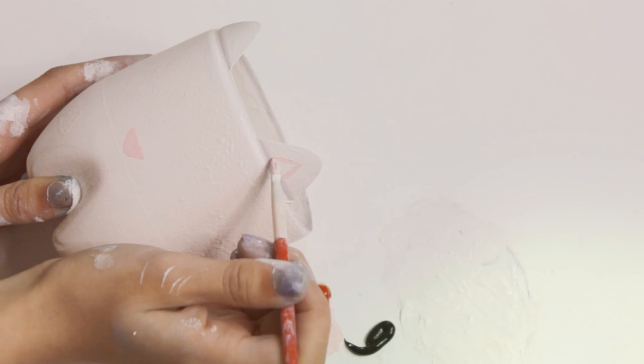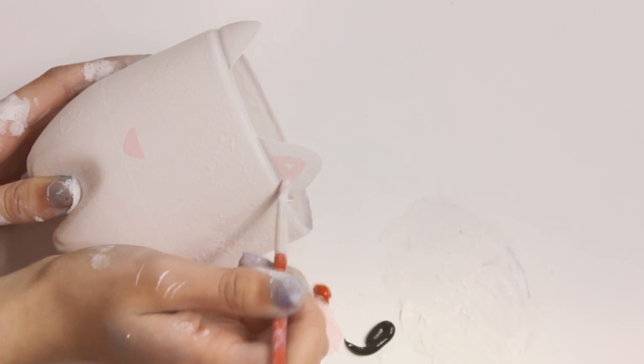And then I mixed some red and white paint and I went in with little triangles for the ears and the nose for the cat.